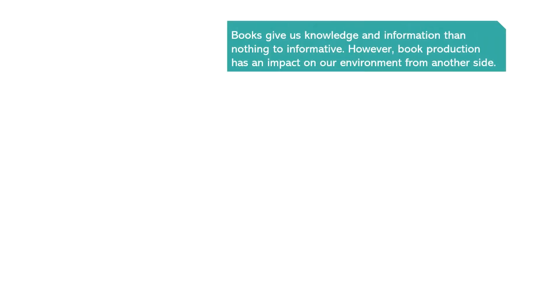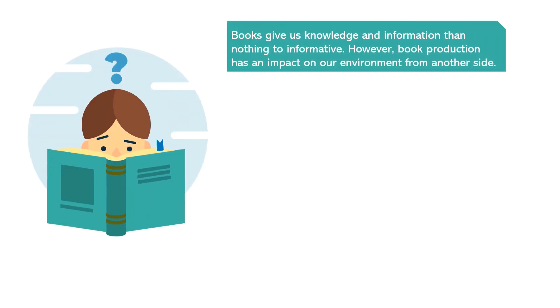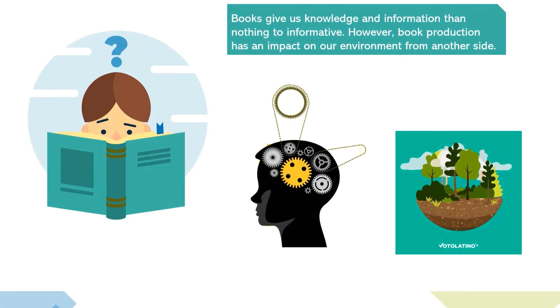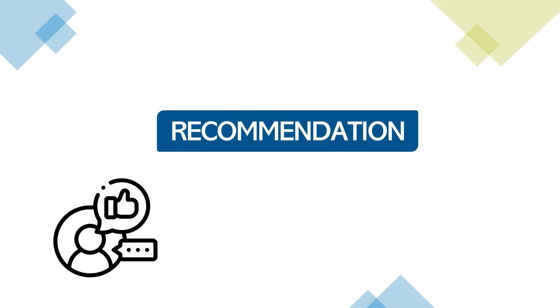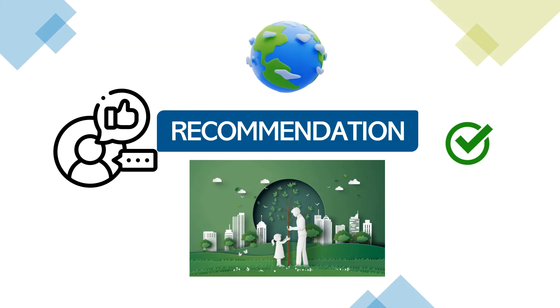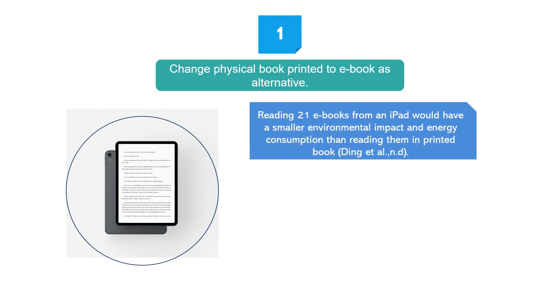Conclusion: books give us knowledge and information, making them highly informative. However, book production has an impact on our environment. Here are some suggestions and recommendations for reducing that impact. Number one: change physical printed books to ebooks as an alternative. Reading 21 ebooks from an iPad would have a smaller environmental impact and energy consumption than reading them in printed book form.